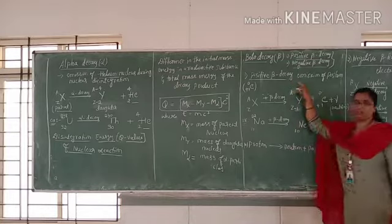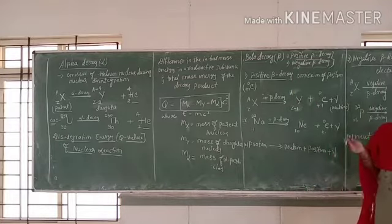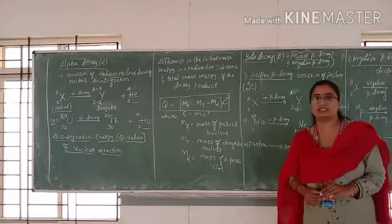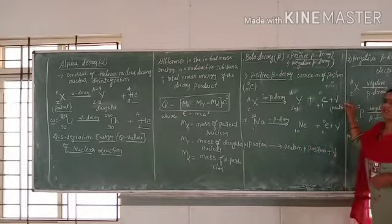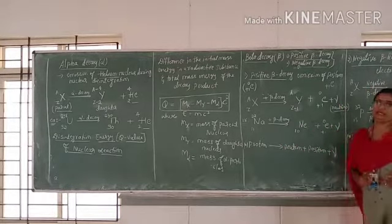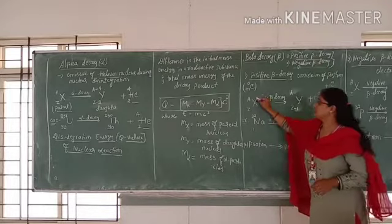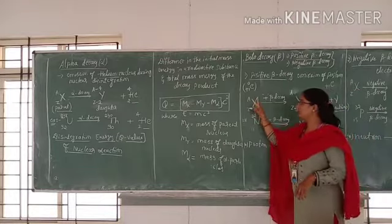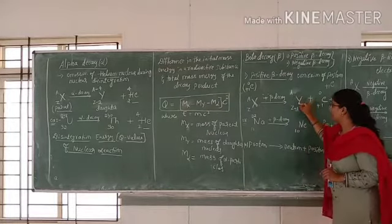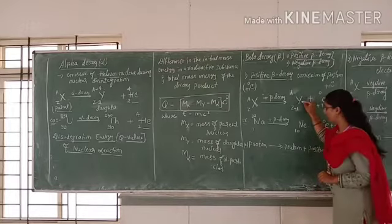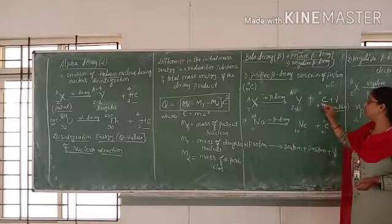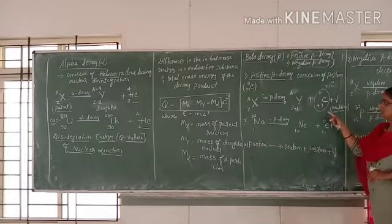The first one is positive beta decay. Positive beta decay is a process of emission of a positron. A positron is a positively charged electron. During nuclear disintegration, the positron is emitted along with a neutrino, which is an elementary particle. In this reaction, X represents the parent nucleus with atomic number Z and mass number A. When this parent nucleus undergoes positive beta decay, Y represents the daughter nucleus, in which the atomic number is decreased by 1 and mass remains constant.